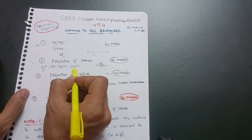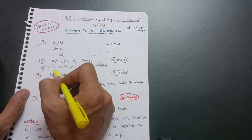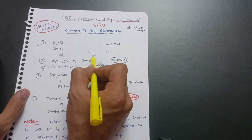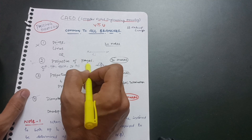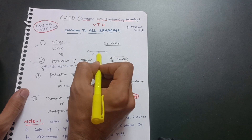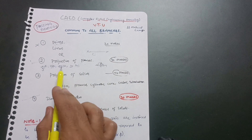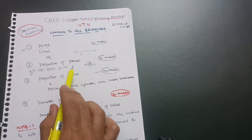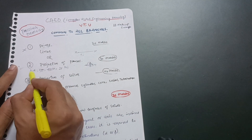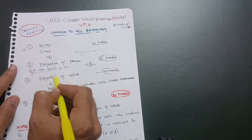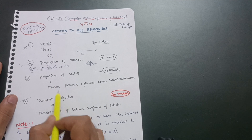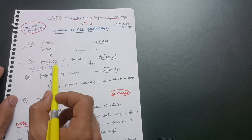'Where' means where it is resting - is it resting on the HP or on the VP? If it is resting on the HP, you start your diagram from the top view below the reference line. If it is resting on the VP, you start the diagram above the reference line. 'How' means is it resting on a corner or on a side. These three points are important for projection of planes and projection of solids.